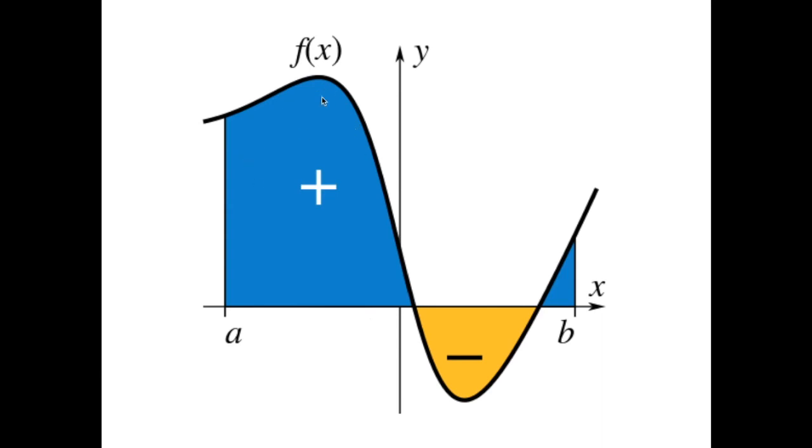If the other extreme of integration b was not here but was moved instead here towards negative values of x, you would see immediately and you would be able to predict that the integral of f of x between a and b located at this point would be a positive number. On the other hand, if I could move a here and b here wherever in the range where f is negative, I could immediately predict that the definite integral of f of x would give rise to a negative quantity, to a negative number. The area is just a negative number.